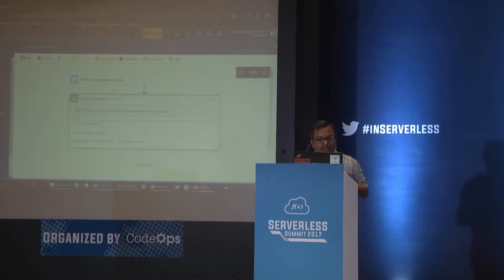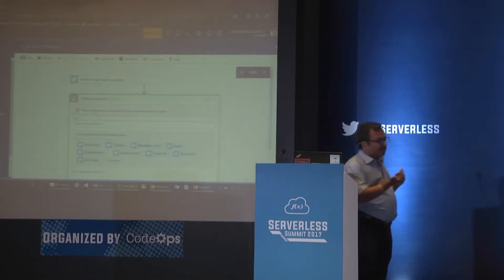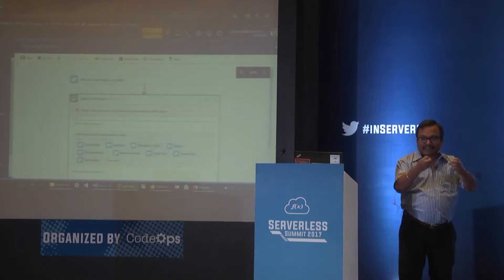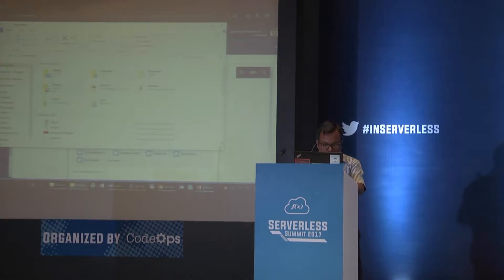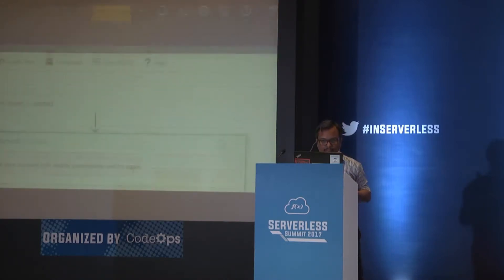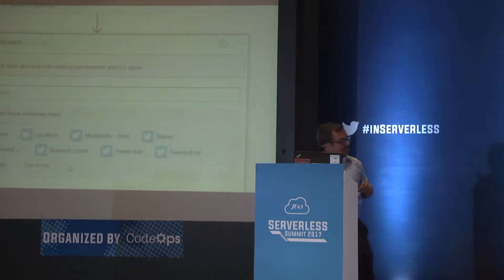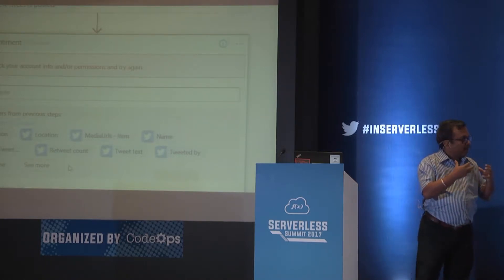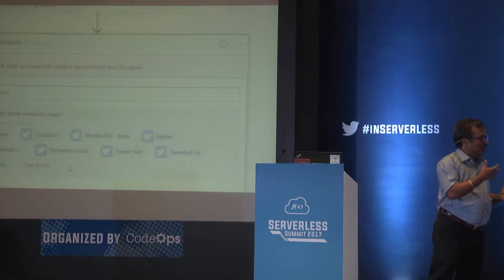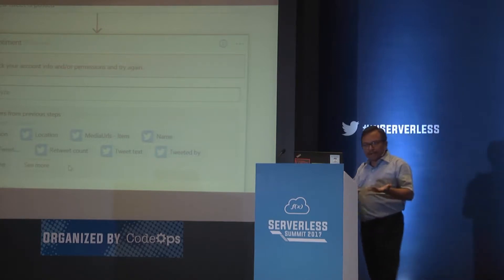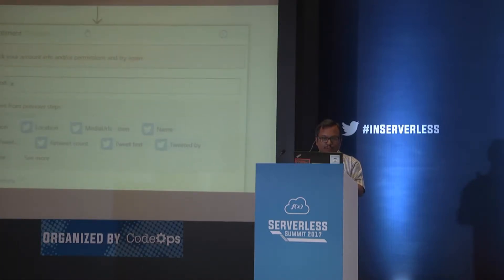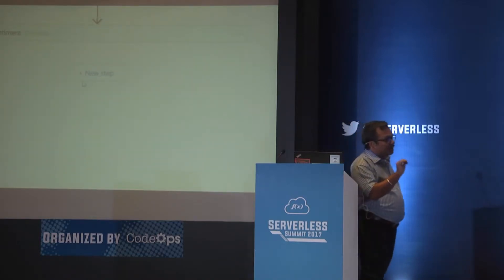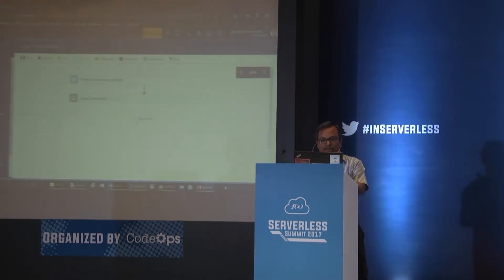It asks me what text I want to analyze, and I can see all the properties available from the Twitter dataset: description, location, who tweeted, tweet text, when it was created, followers, retweets, and so on. I'll pick up the tweet text and pass it on so that it performs sentiment analysis. Then I'll go back and add one more step — to push that tweet and the sentiment to a data source for later analysis, or send it to an internal system. We have around 200 connectors available — SQL Server, Oracle, DocumentDB, MongoDB, and more. You can also build your own connector.